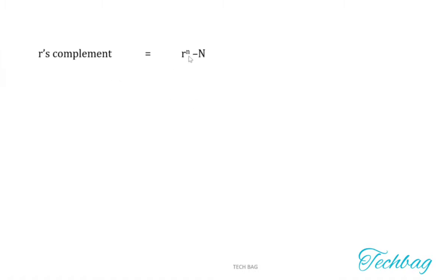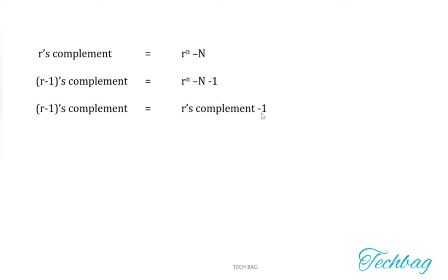Next, we will see how to calculate R's complement and R-1's complement. R's complement is calculated from the formula R^n minus N, where N is the number for which we are calculating R's complement, R is the base of the number system, and n represents the number of digits in N. R-1's complement is calculated from R^n minus N minus 1, which means R-1's complement equals R's complement minus 1, or equivalently, R's complement equals R-1's complement plus 1. This is the simplest way to calculate R's complement.